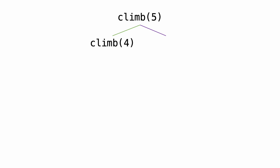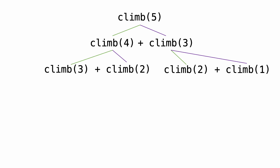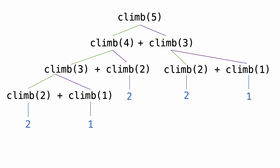Let's visualize how the recursive tree looks. Let's say n equals five. We call climb and pass five. Since five is not one or two, we make two recursive calls: we pass four to the first call and three to the second. We still haven't hit the base case, so we recurse again. Climb with four calls climb three and climb two; on the other side, climb three calls climb two and climb one. We've now reached some base cases: when n equals two there are two ways, and when n equals one there is one way. After resolving all remaining recursive calls, we can add up all the base case values. The final answer is that there are eight ways to climb five stairs.